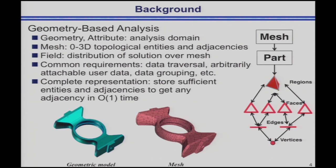The approach taken here assumes a high-level definition of the domain, which — even from image data — will ultimately have an understanding of topology as in geometric models. We typically use non-manifold representations such as the radial edge type of data structures, which allow us to deal with various types of multi-material and mixed-dimension models in a consistent manner. This is a higher-level representation before you even have the mesh.